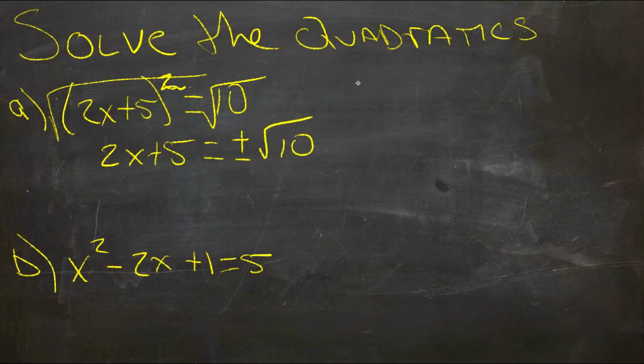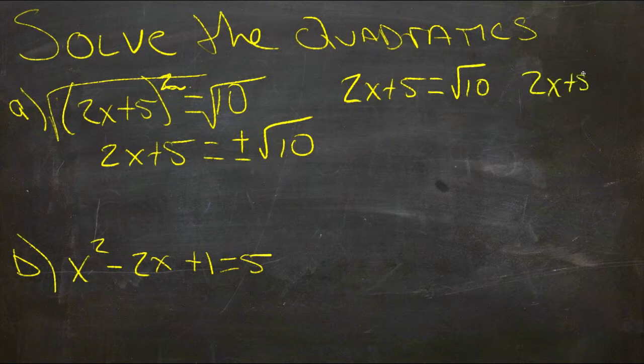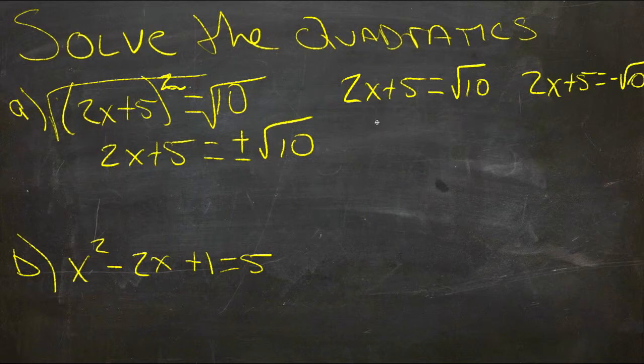Which means that we have 2x plus 5 is equal to the square root of 10, and 2x plus 5 is equal to negative the square root of 10. So we'll solve both of these equations individually.